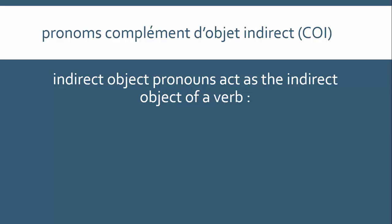I think this is best explained with an example: 'I am giving the gift to you.' In this sentence, we do have a direct object — that is, the gift — because it is the thing that is being given. You, however, are still involved; you are quite literally at the receiving end of the action. You are not the thing being given, but you are receiving it, so there is a link between you and the giving, albeit indirect.